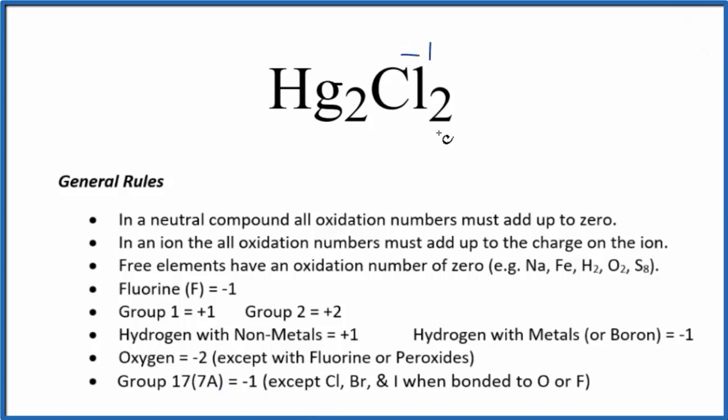So each chlorine is minus one. Two times minus one, that gives us a minus two. So for this all to add up to zero, we have to have two times plus one. That'll give us a plus two, and then plus two and minus two, that adds up to zero.